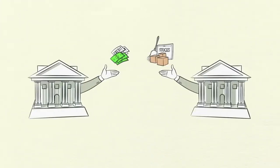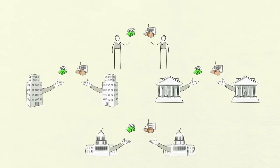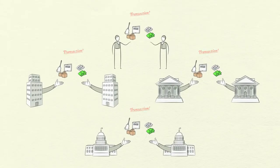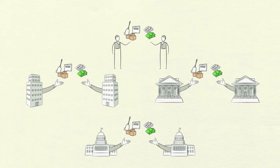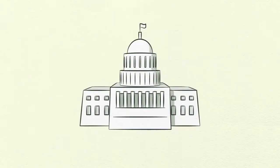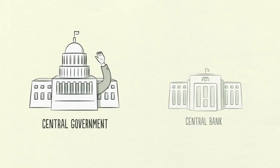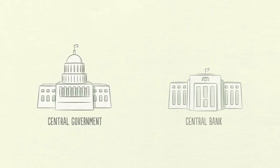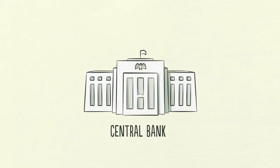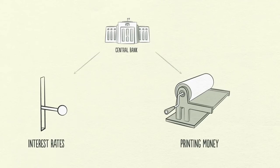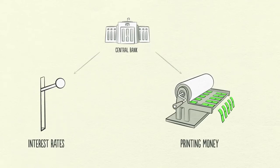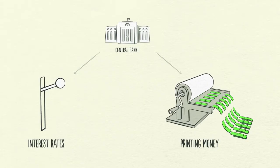People, businesses, banks, and governments all engage in transactions, exchanging money and credit for goods, services, and financial assets. The biggest buyer and seller is the government, which consists of two important parts: a central government that collects taxes and spends money, and a central bank, which is different from other buyers and sellers because it controls the amount of money and credit in the economy. It does this by influencing interest rates and printing new money. For these reasons, the central bank is an important player in the flow of credit.